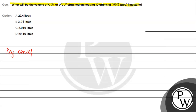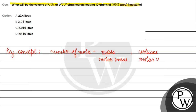The number of moles is basically equal to mass divided by molar mass, which in turn equals volume divided by molar volume. The molar volume value is 22.4 liters per mole.